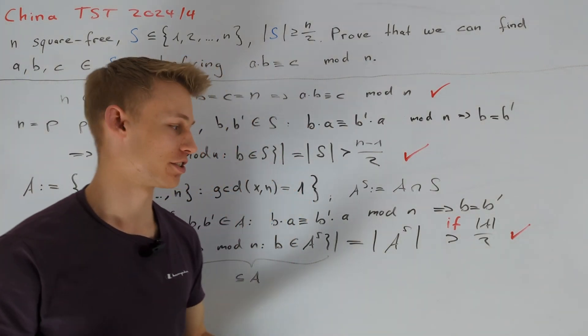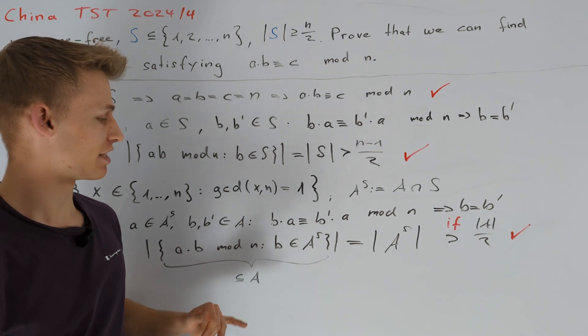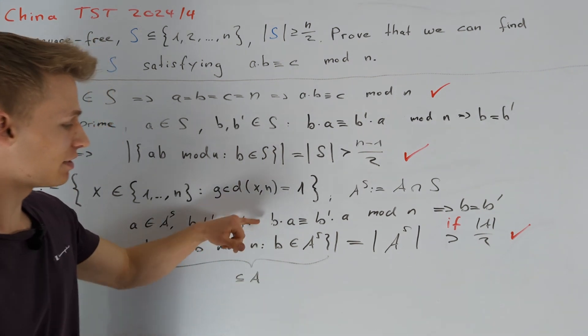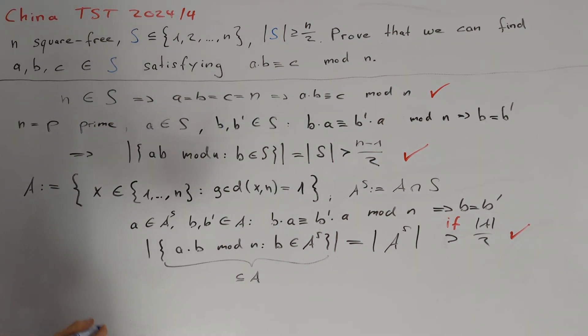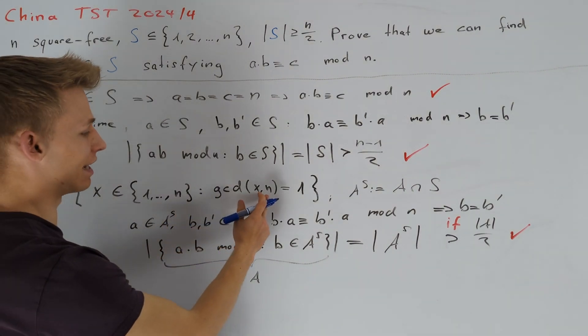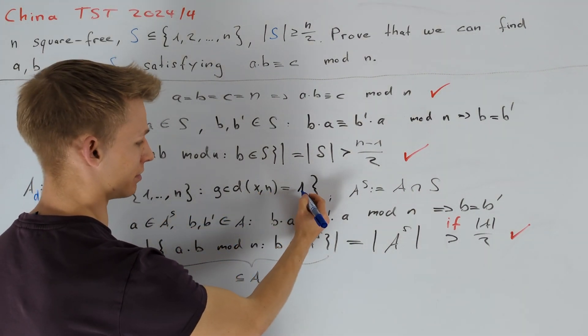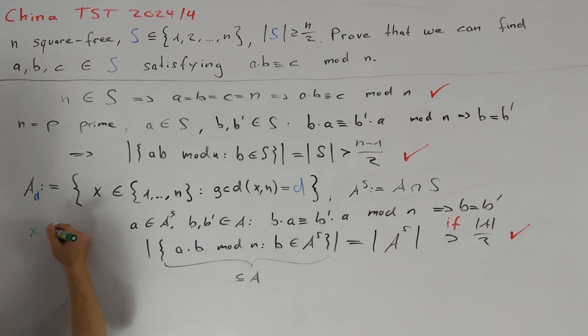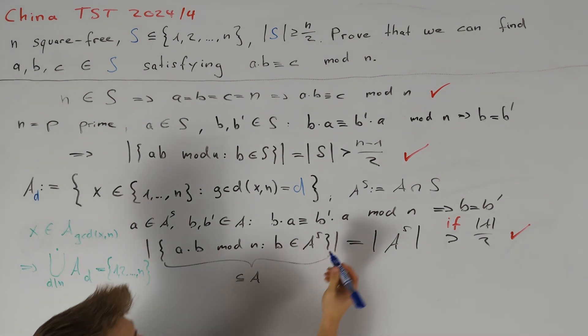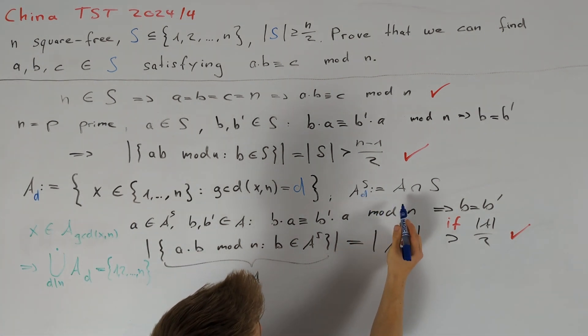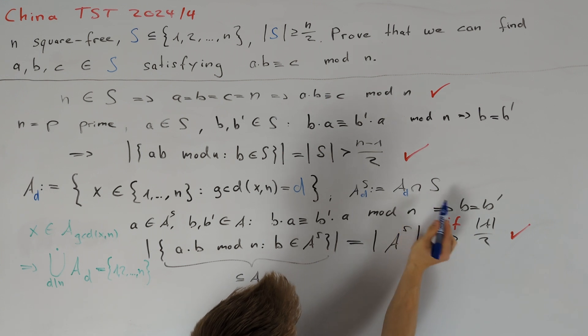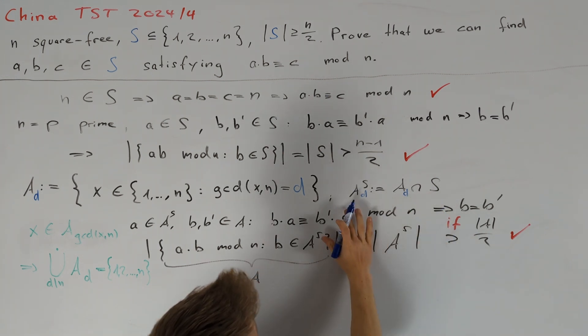To do this, we want to partition the other numbers into smaller subsets, such that for each subset these two properties here are true. Namely, we want to define the set A_d containing all x from the set 1 to n, such that the greatest common divisor of x and n is equal to d. Since we know that x is exactly in the set A gcd of x and n, this here is indeed a partition. We define A_d,S to be the intersection of A_d and S to get a partition of S into A_d,S.